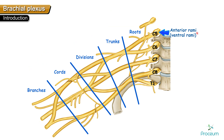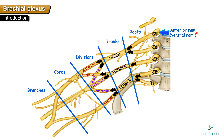The brachial plexus is formed from the anterior rami of spinal nerves C5, C6, C7, C8, and T1. These roots unite to form the trunks. The C5 and C6 roots unite to form the upper trunk. C7 continues as the middle trunk. C8 and T1 form the lower trunk. Each trunk then divides into an anterior division and a posterior division, giving six divisions in total.